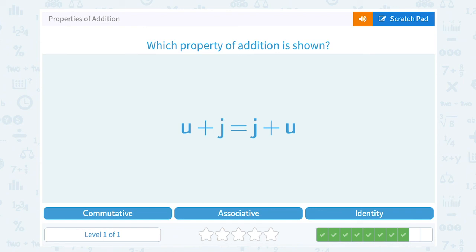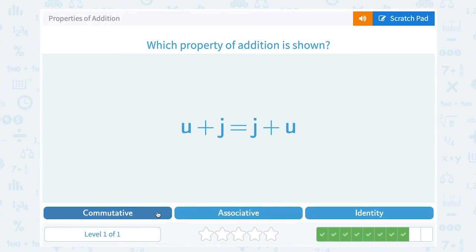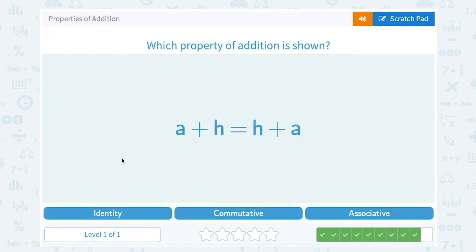U plus J is equal to J plus U. Well again, we can see that they moved the order. So that would be commutative property. A plus H is equal to H plus A. Again, they moved those numbers. So commutative property.